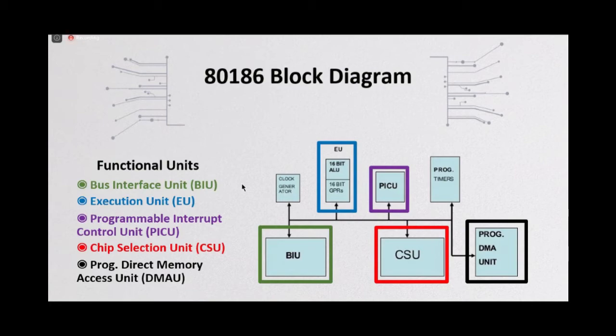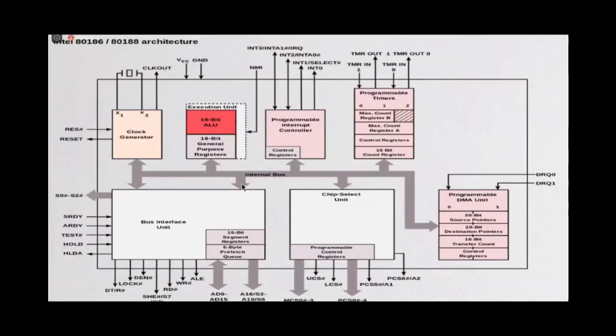Then in the next slide, we can see the internal architecture of 80186. We can notice from the top left corner that it has one clock generator, which is set internally in this architecture. But in case of 8086 microprocessor, the clock generator was set externally.